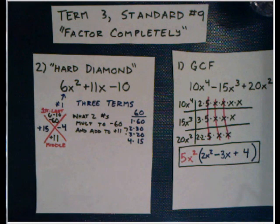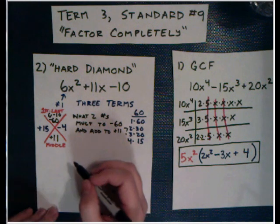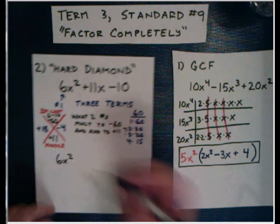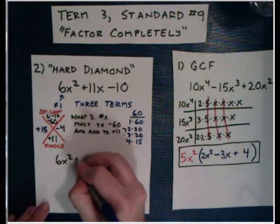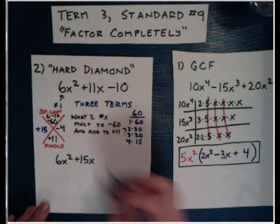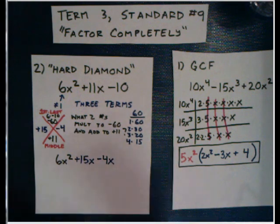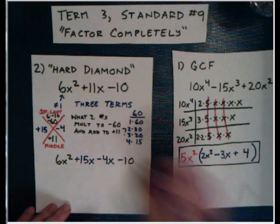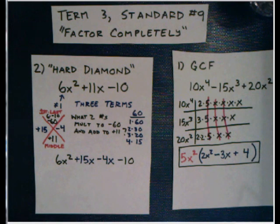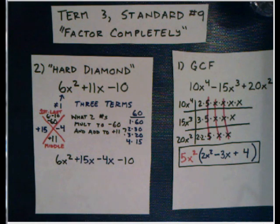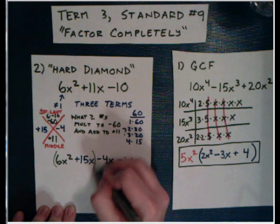Now what I'm going to do with this is I'm going to use them to rewrite this polynomial. Instead of 6x² + 11x - 10, I'm going to write it as 6x² + 15x, taking the number out of the diamond, minus 4x, also out of the diamond, minus 10. So there's my new polynomial. And now what I'm going to do with this is, since there are four terms, I'm going to use the split the middle strategy. That's why we did this, was so we could use split the middle.